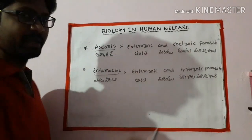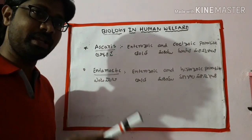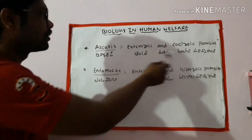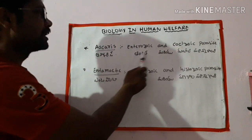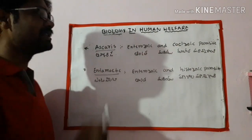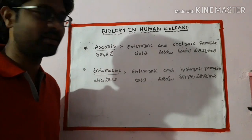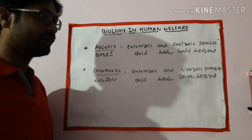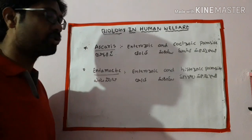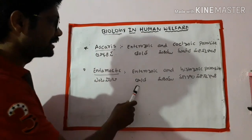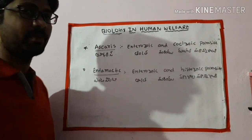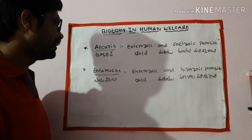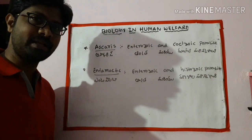This includes Anthra and Coher — Enterozoic and Sylozoic parasites. Anthem is both an Enterozoic and Histozoic parasite. This covers the classification of parasites.